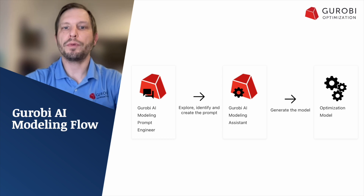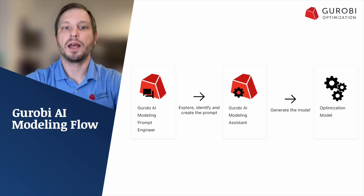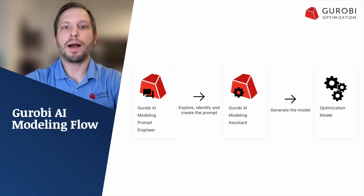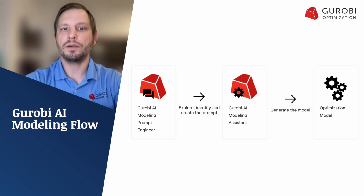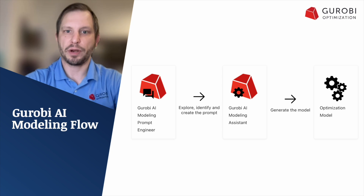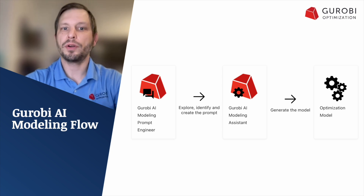Let's do a quick review of the process flow of using Gurobi AI modeling, which is composed of two agents: the prompt engineer and the modeling assistant. The prompt engineer is a conversational tool to help you produce a problem statement, and this problem statement fits a template for the modeling assistant to write the model formulation — the algebraic representation — and create code in Gurobi Pi, which will then solve.